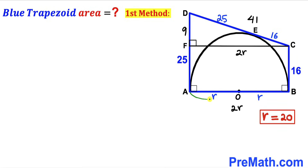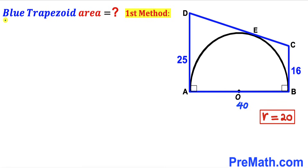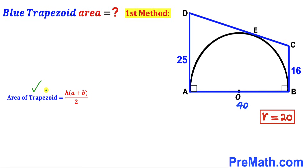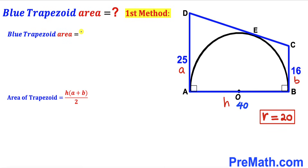The diameter AB is 2 times r, so AB equals 2 times 20, which is 40 units. Now for the final step: we calculate the area of the blue trapezoid ABCD using the formula area equals height H times (a + b) divided by 2. Our height H is 40 units, base A is 25, and base B is 16.